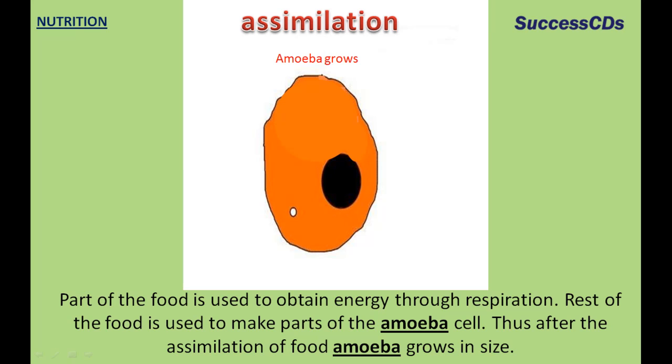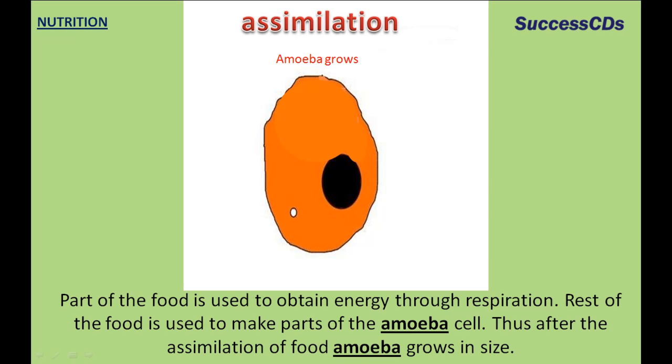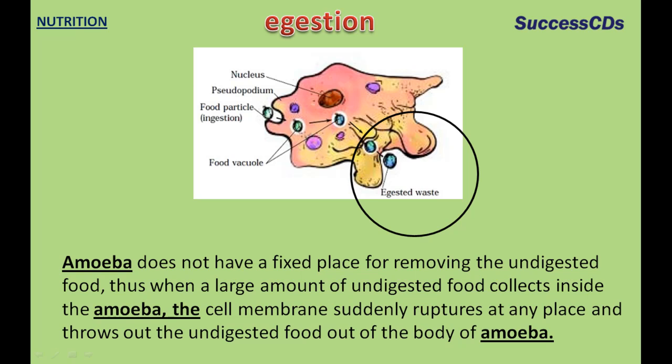Thus, after the assimilation of food, amoeba grows in size. Amoeba does not have a fixed place for removing undigested food. When a large amount of undigested food collects inside the amoeba, the cell membrane suddenly ruptures at any place and throws out the undigested food out of the body of amoeba.